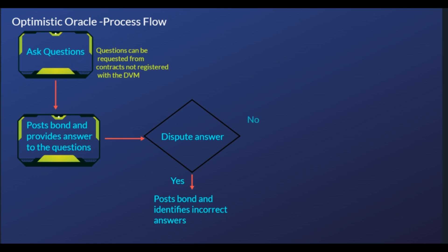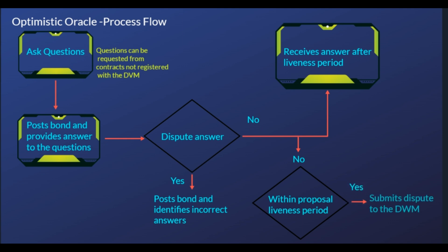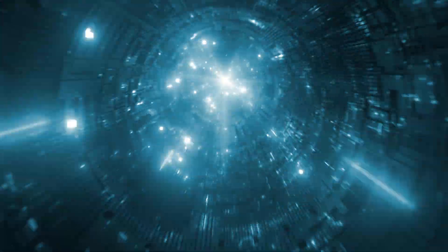The data verification mechanism handles synthetic tokens once a contract expires and when a settlement is needed. UMA designed an honest oracle with economic incentives to discourage bad behavior. As the protocol's governance and utility token, UMA is critical to secure its smart contracts and maintain the optimistic oracle's price verification. UMA's optimistic oracle allows contracts to quickly request and receive data information.